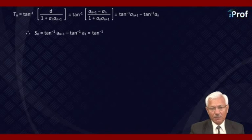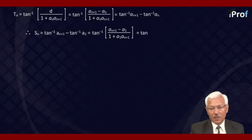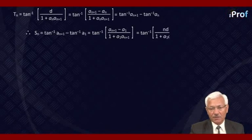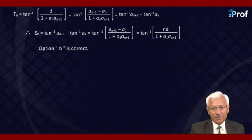We know that AN+1 equals A1 plus N times D. Therefore AN+1 minus A1 equals N·D. Replacing the numerator in the telescoping sum, we get tangent inverse N·D divided by 1 plus A1·AN+1, which shows that option B is correct.